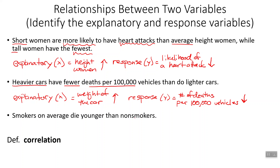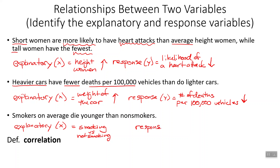Smokers, on average, die younger than non-smokers. What's causing — or explaining — the earlier death would be smoking. We could quantify this by number of cigarettes per day, or just smoking versus not smoking. The response Y value is the age at death. So as smoking goes up, the age of death goes down.